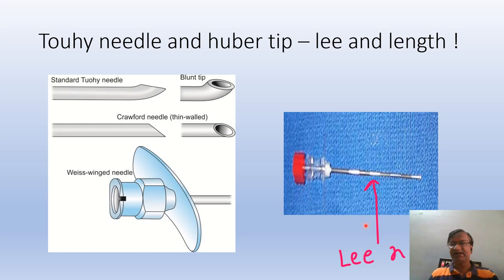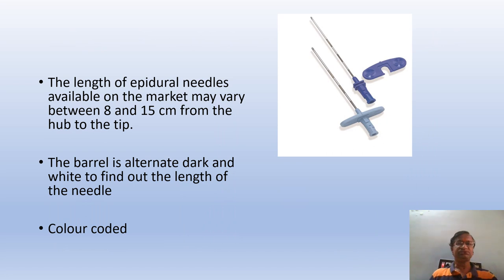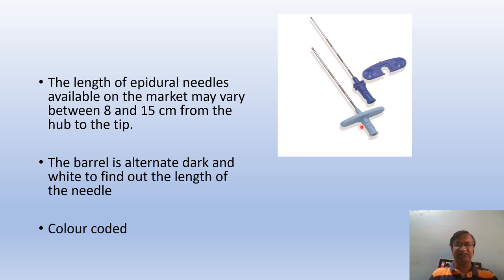Sometimes we call these Lee needles because they have markings of one centimeter. The length of epidural needles available in the market may be between 8 to 15 centimeters — usually we use 10 centimeters. This is the barrel of the needle, and this is the Weiss winged needle.